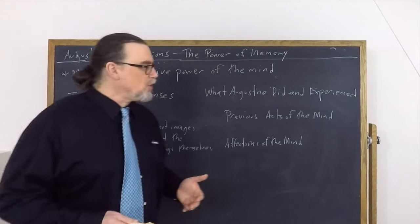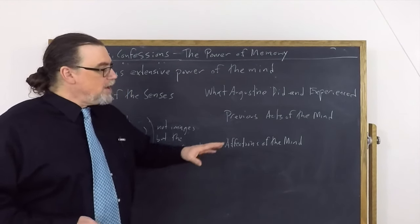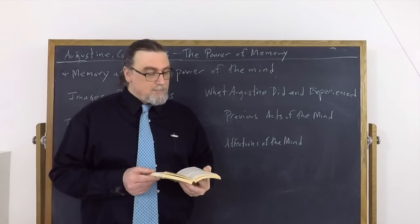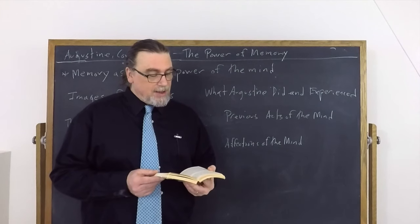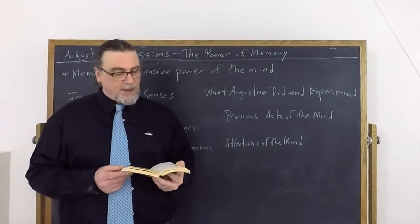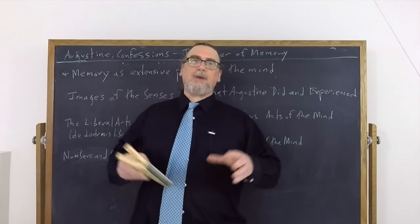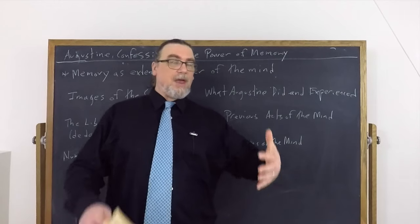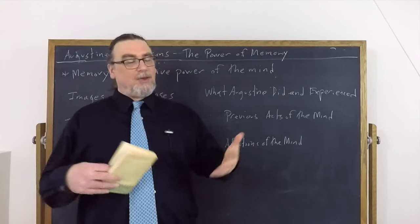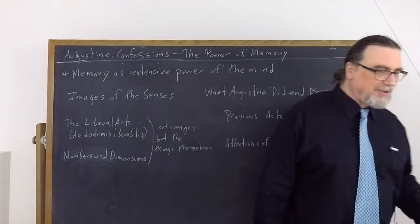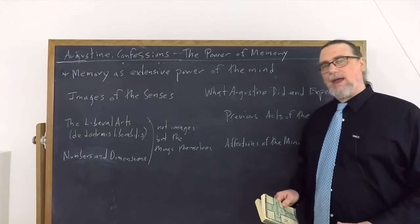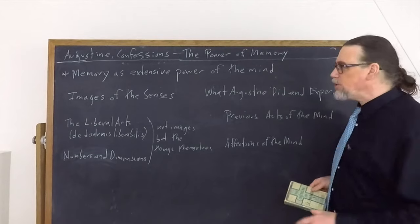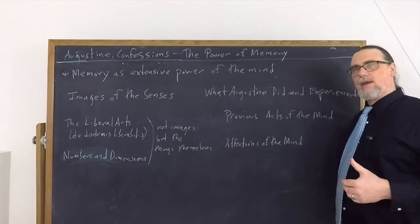So if we've got cognitive acts of the mind, what about affective or emotional or we could say desirous or volitional acts of the mind, affections as he's going to call it of the mind. Well, he talks about that as well. The same memory contains the affections of my mind, not in that manner in which the mind itself has them at the time it experiences them, but in a different manner. And there's something paradoxical to explore here. He can say, I remember being joyful or I remember joy without that making me joyful necessarily right now. Although there are plenty of cases where we might remember something we enjoyed in the past and we feel good about it. And so the affections of the mind, the feelings, the desires, the fears, those are things that we remember as well. So you see just what a massive scope memory is going to have.